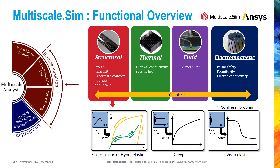Once the unit cell model of microstructure has been created, it is used to conduct virtual material tests to obtain equivalent material constants. Multiscale.sim allows you to identify material constants for many types of material behavior. All material models support anisotropic behavior. Most cases other than structural analysis are treated as linear problems. On the other hand, various non-linear material behaviors can be taken into account depending on the phenomenon considered.